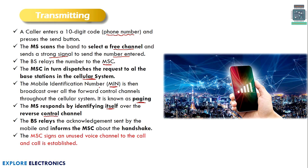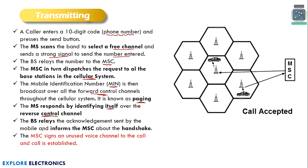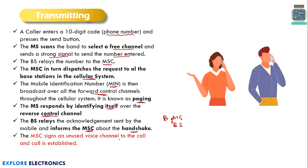When the mobile identification number matches with the mobile station, that mobile station responds by identifying itself through the reverse control channel. The MSC broadcasts the mobile identification number to all base stations via the forward control channel, and the mobile station identifies itself back to the base station through the reverse control channel. The base station relays the acknowledgement sent by the mobile and informs the MSC. A handshake between person B's mobile station and the base station occurs, and then the Mobile Switching Center assigns an unused voice channel to the call, and the call is established between person A and person B.